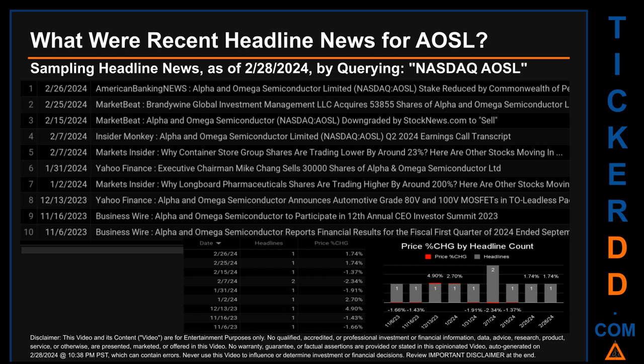Wednesday, February 7, 2024 had the most headlines — two discovered headlines. Market Beat published: 'Brandywine Global Investment Management LLC acquires 53,855 shares of Alpha and Omega Semiconductor Limited.' Insider Monkey published: 'Alpha and Omega Semiconductor Limited Q2 2024 earnings call transcript.'